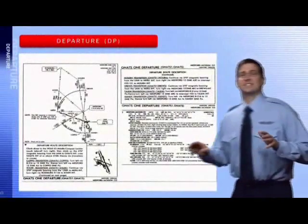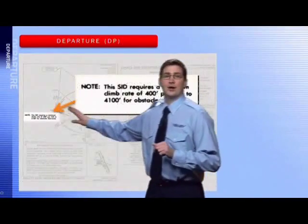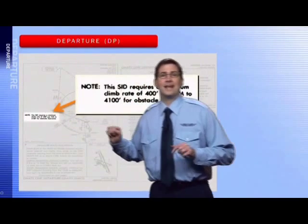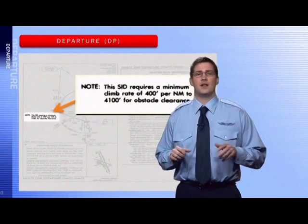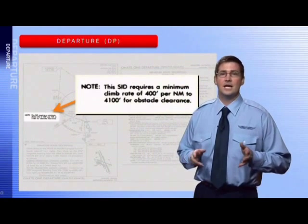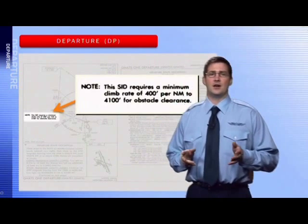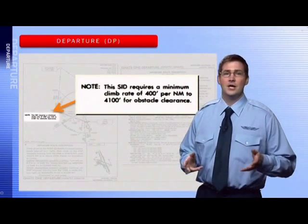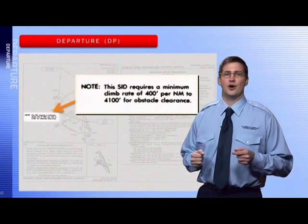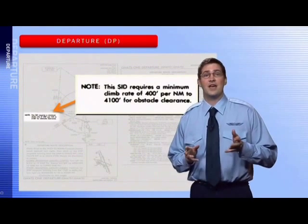Let's take a look at an actual DP. This is the NAT DP at Medford, Oregon. You can see right over here that there is a requirement for a climb rate of 400 feet per nautical mile up to 4,100 feet in order to provide obstacle clearance. Since your vertical speed indicator shows feet per minute and you need feet per nautical mile, you must use a conversion chart.